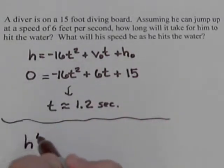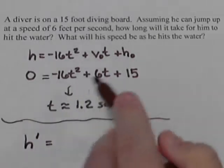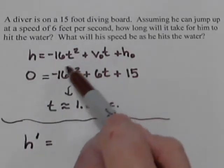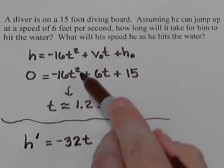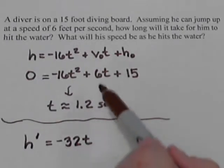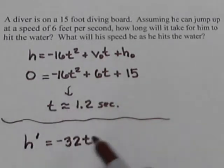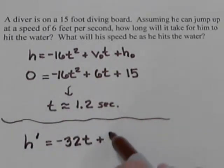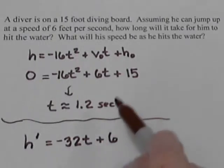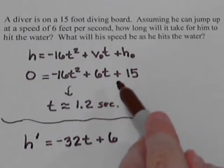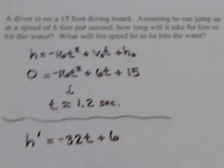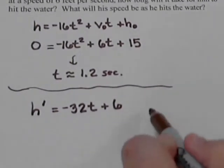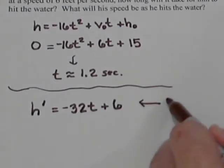So our derivative equation is going to be, we bring the 2 out front, that gives us -32t. Reduce the exponent by 1, leaving a t. Next, we have a linear term, and so the derivative of that would just be 6. We drop the t off. The +15 is a constant term, so that goes away. So our speed formula is just -32t + 6.